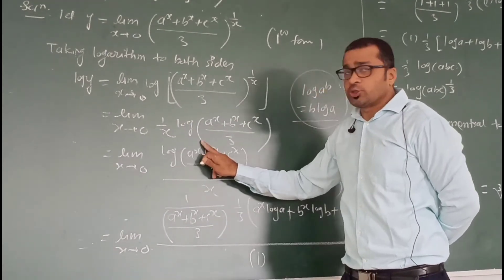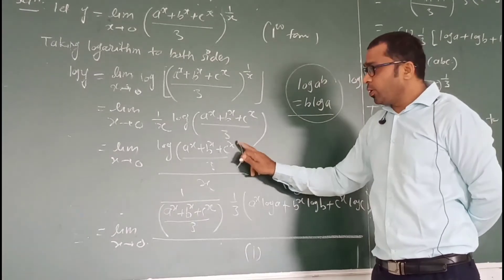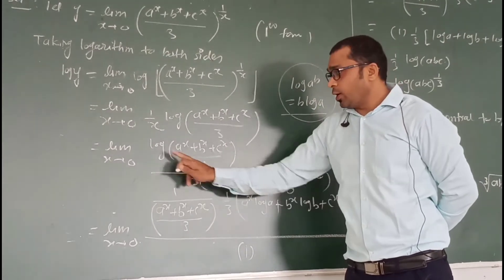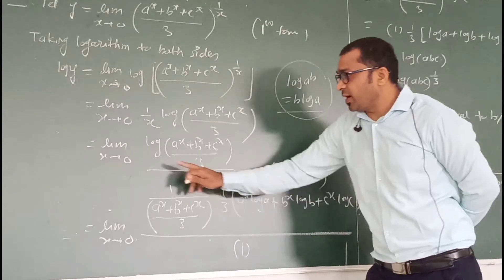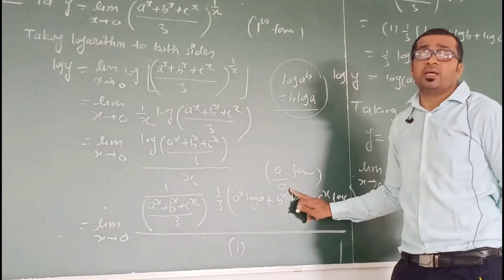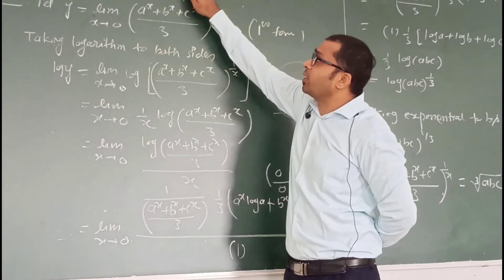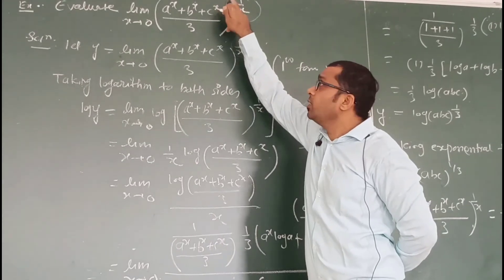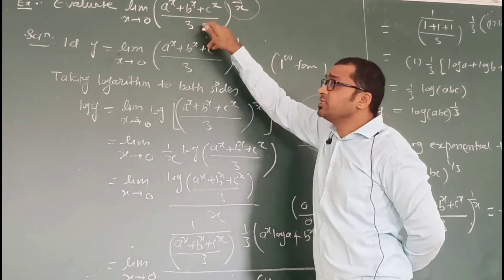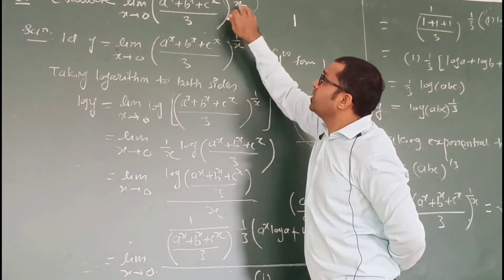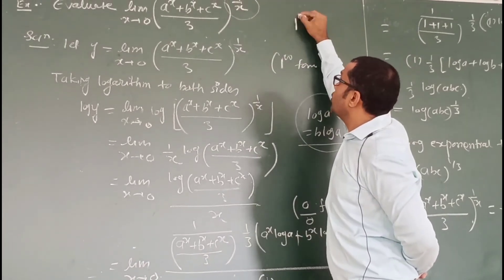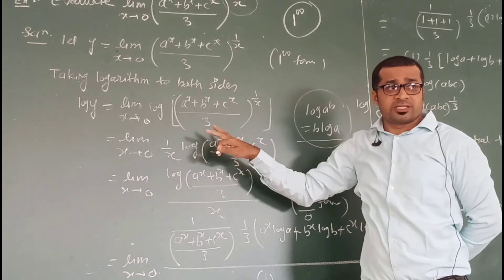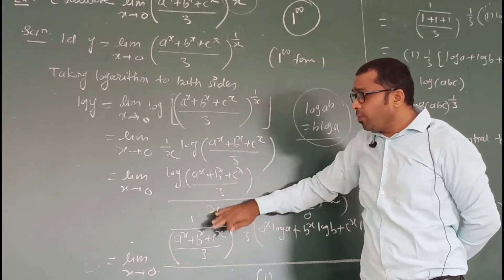If we put x = 0 directly in the original: a⁰=1, b⁰=1, c⁰=1, so (1+1+1)/3 = 1, and 1 to the power (1/0) is 1 to the power infinity — which is an indeterminate form. That is why we take the logarithm and convert it. The log form gives 0/0: log((1+1+1)/3) = log(1) = 0 in numerator, and x=0 in denominator. So we apply L'Hospital's rule by differentiating numerator and denominator separately.